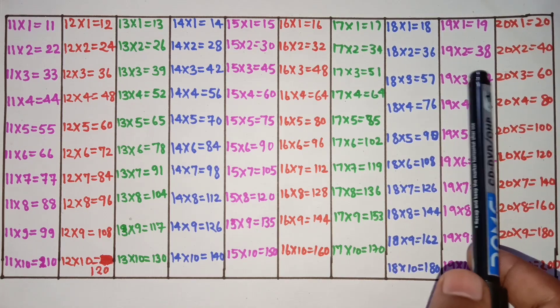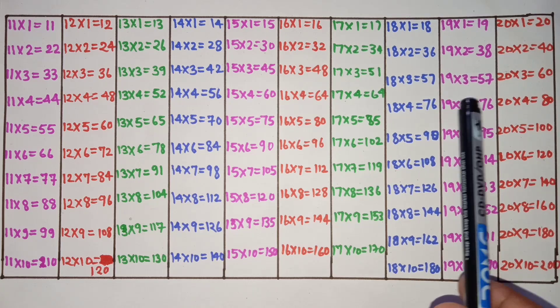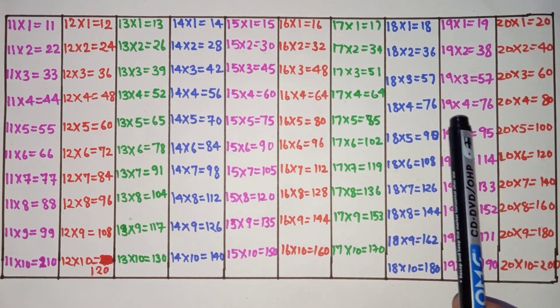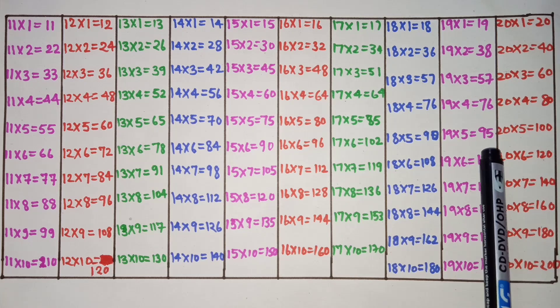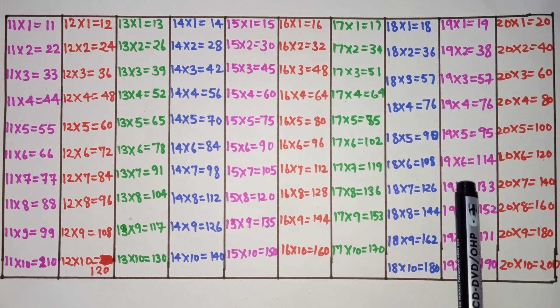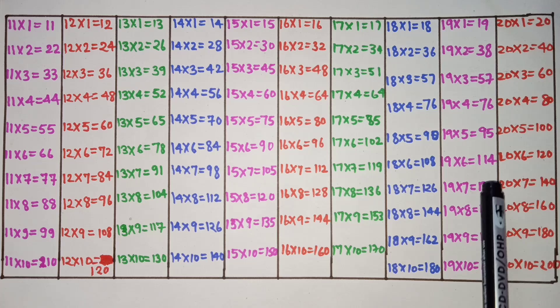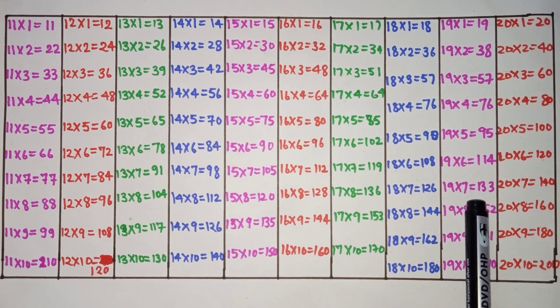19 ones are 19, 19 twos are 38, 19 threes are 57, 19 fours are 76, 19 fives are 95, 19 sixes are 114.